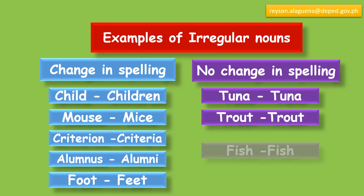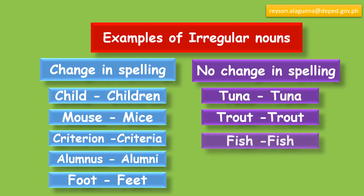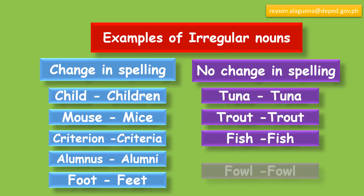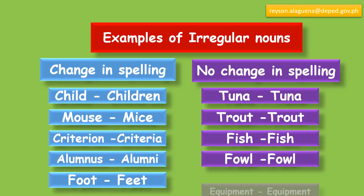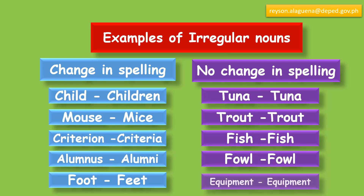No change in spelling: Tuna stays Tuna, Trout stays Trout, Fish stays Fish, Foal stays Foal, Equipment stays Equipment.